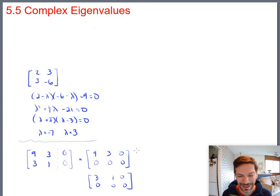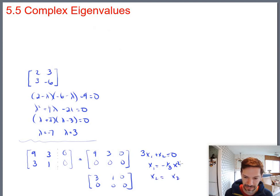But anyway, at some point you translate this back into saying this means 3x1 plus x2 equals 0. Or more to the point, x1 equals negative 1 third of x2 and x2 equals x2. And factor the x2 out and I'm squeezing this way down here in the bottom. You get negative 1 third, 1. Any multiple of that for your eigenvector that goes with the eigenvalue of negative 7.